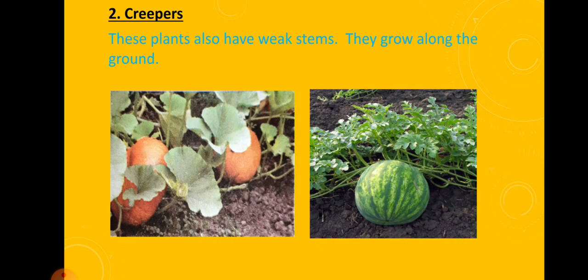Next, creepers. Students, these plants also have weak stems. They grow along the ground. Some examples of creepers are muskmelon, pumpkin, watermelon. These are the examples of creepers.